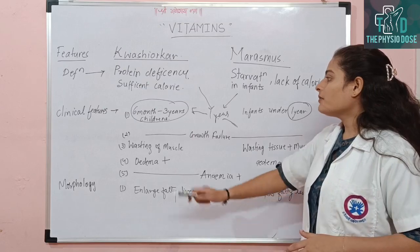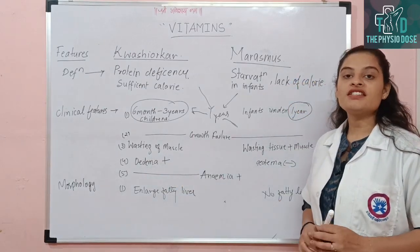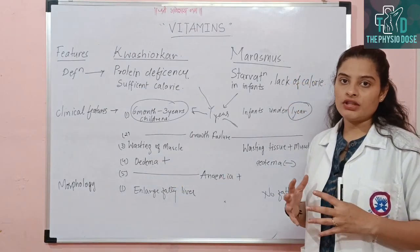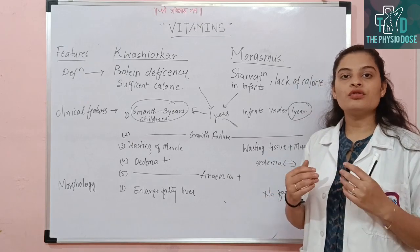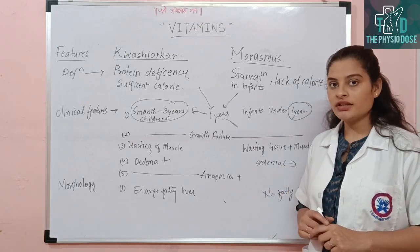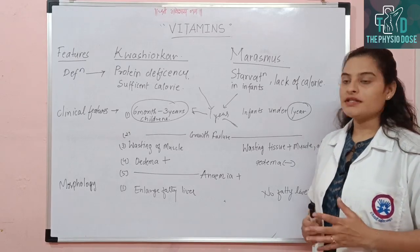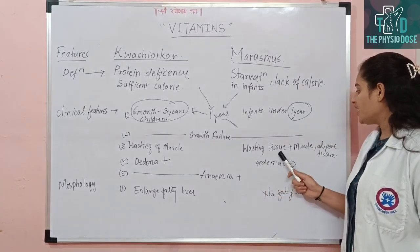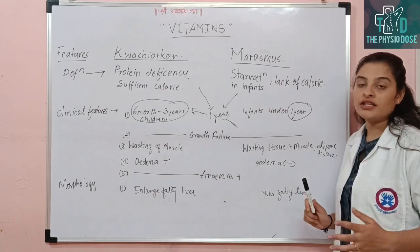Muscle wasting is also common to both conditions. The wasting of muscles means our muscles do not function properly — they don't get nutrition and begin to lose function. In Marasmus, adipose tissue and muscle are all three affected.